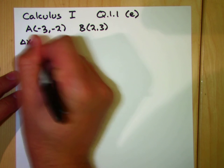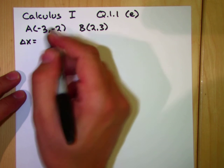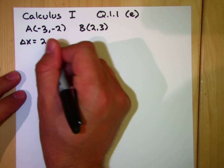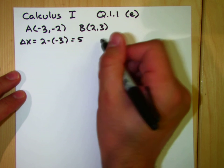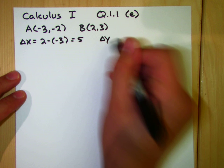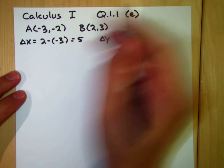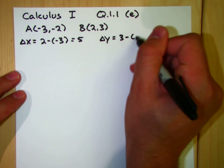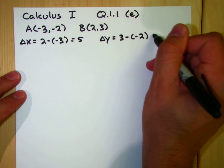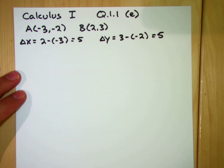Delta X from A to B is equal to X2 minus X1, which is 2 minus negative 3, which is equal to 5. And delta Y from A to B is equal to Y2 minus Y1, which is equal to 3 minus negative 2, which is also equal to 5.